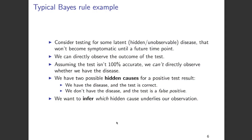Let us consider that you're testing for some latent disease that won't become symptomatic until sometime into the future. We can conduct some tests and directly observe the outcome. Assuming that the test is not 100% accurate, we can't directly observe whether we have the disease or not. So we have two possible hidden causes for a positive test result. We either have the disease and the test is correct, or we don't have the disease and the test has given a false positive. What we are interested in is inferring which hidden cause underlies our observation.